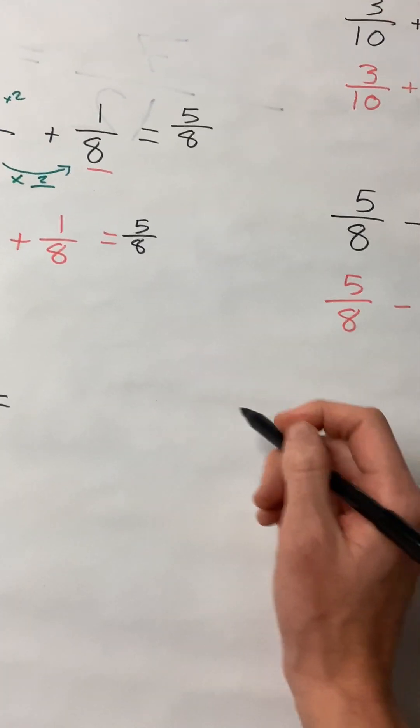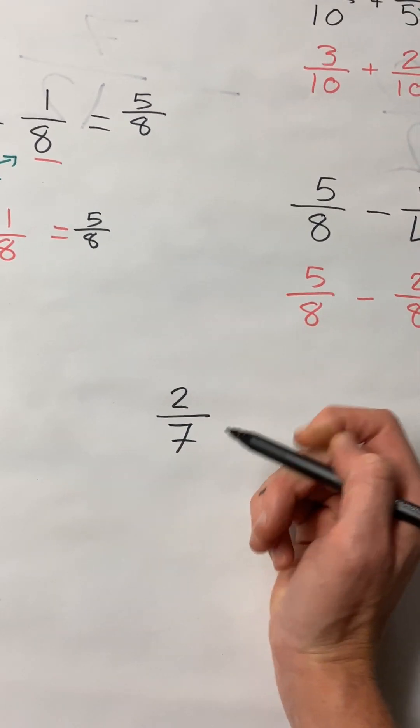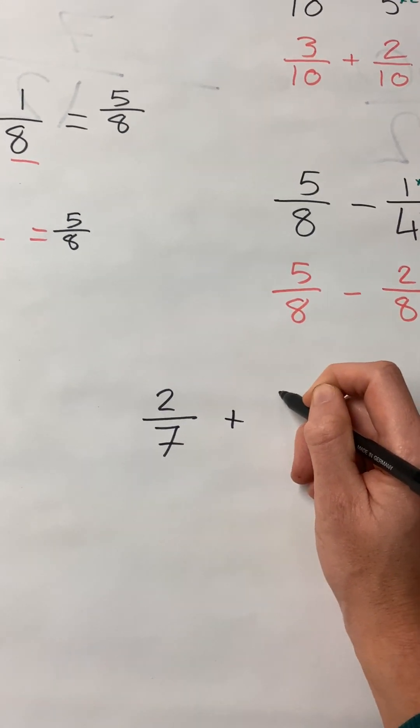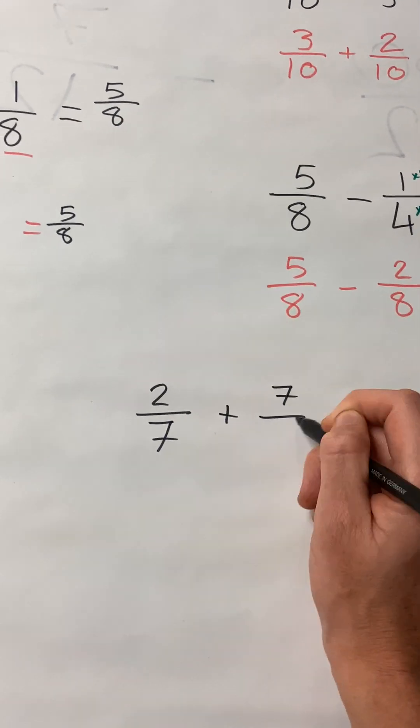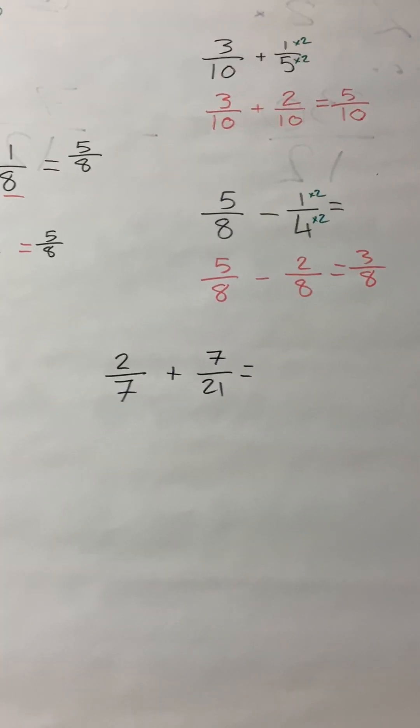Now, what about two-sevenths? Oh, we're getting more complicated now. Plus seven-twenty-oneths. Do you know your seven-times table?